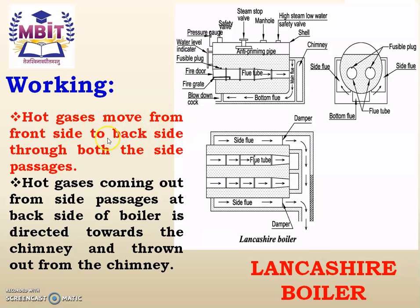Hot gases move from the front side to the back side through both the side passages. From the side flue, hot gases pass from the front side of the boiler to the back side. Hot gases coming out from the side passages at the back side are directed towards the chimney and thrown out into the atmosphere. A damper is provided before the chimney. If the hot gases are sufficiently hot, the damper is closed so that the hot gases remain inside the side passage and continue to heat the water and convert it into steam.